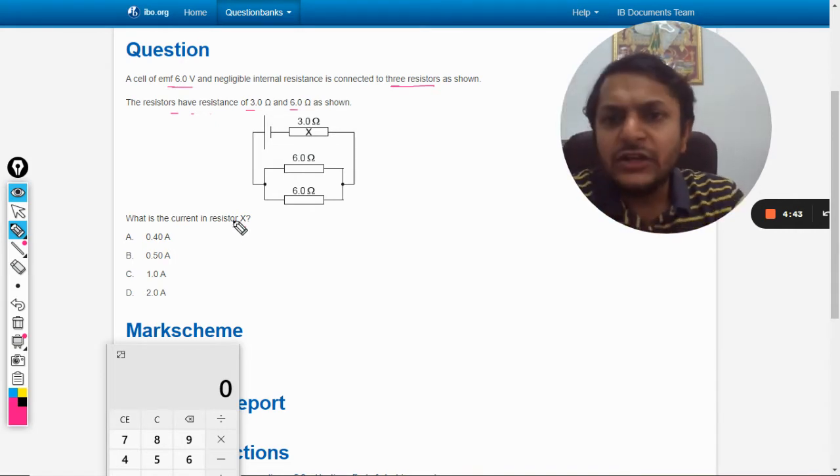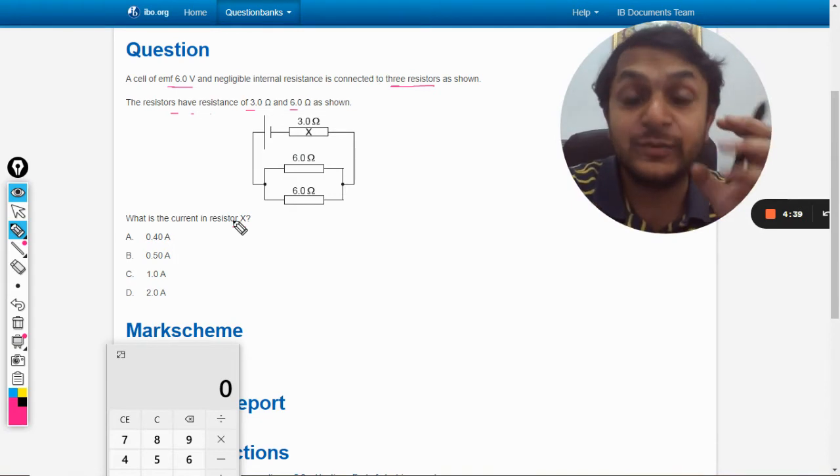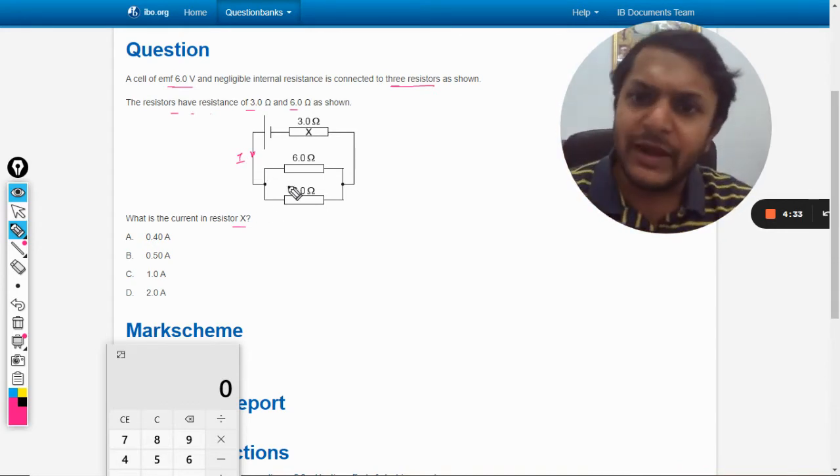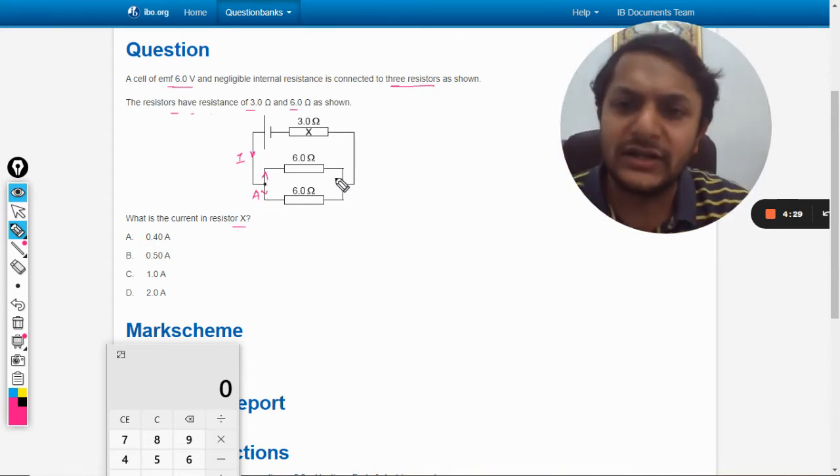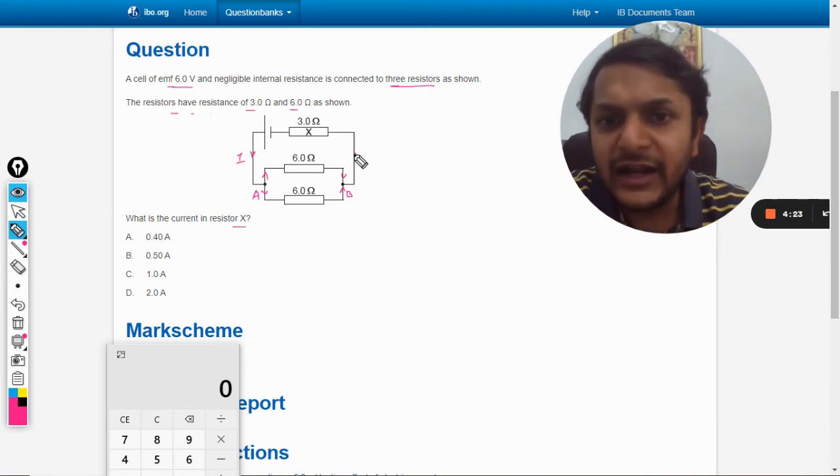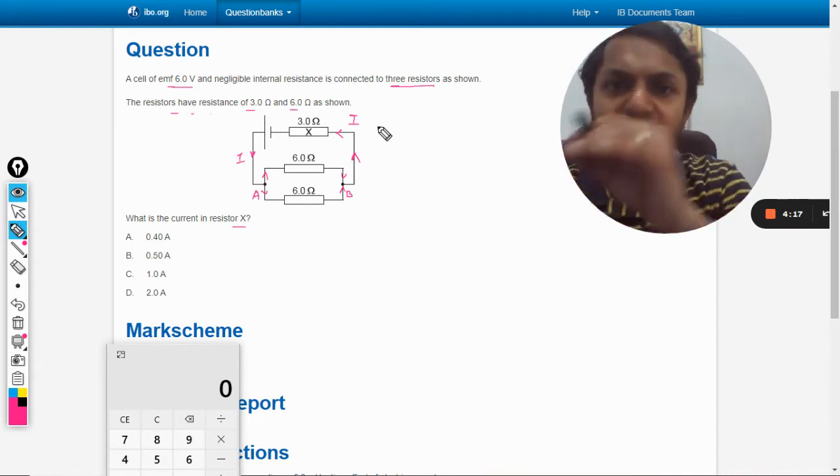Let us first see the circuit and try to judge how much current is passing through resistor X. Let us say current I starts from the battery. First of all, at junction A it gets divided into two parts, and let us name this junction as B. So at B the current unites again and it moves towards the resistance X.